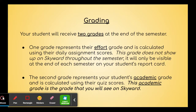Your student will receive two grades at the end of the semester. One grade represents their effort grade, and it is calculated using their daily assignment scores. This grade does not show up on Skyward throughout the semester — it will only be visible at the end of each semester on your student's report card. The second grade represents your student's academic grade, and it's calculated using their quiz scores or test scores. This academic grade is the grade that you see on Skyward, so the grade will only change after a test or a test retake.